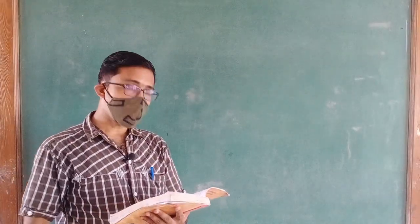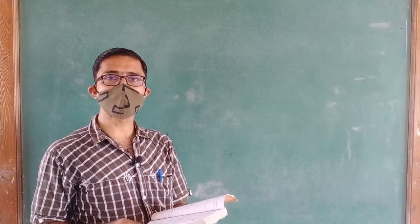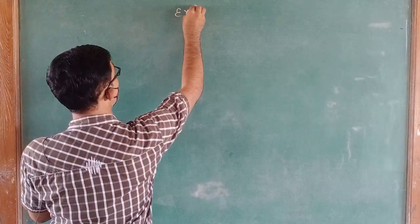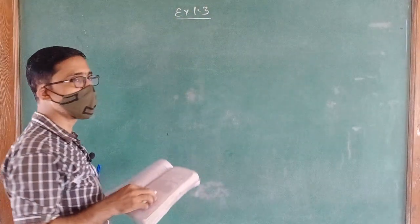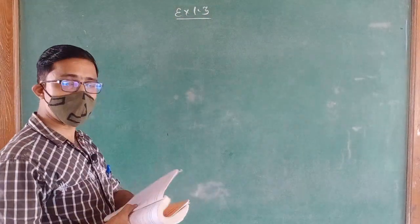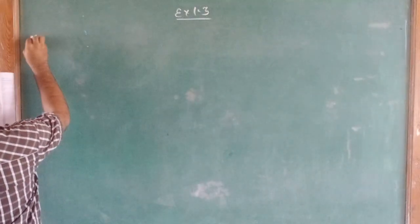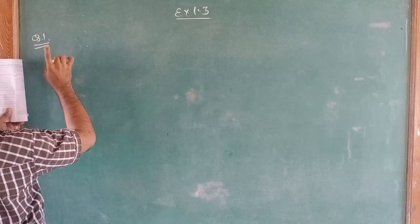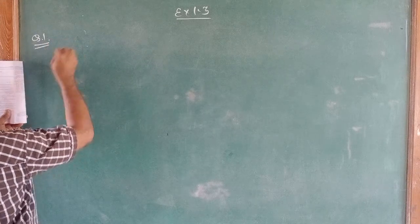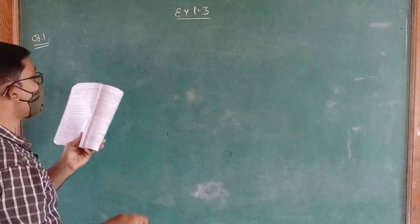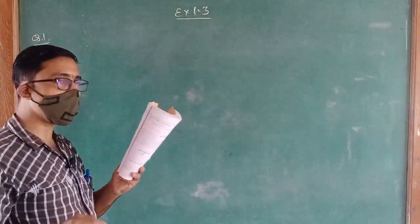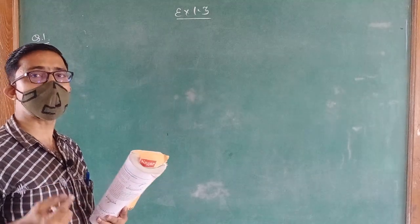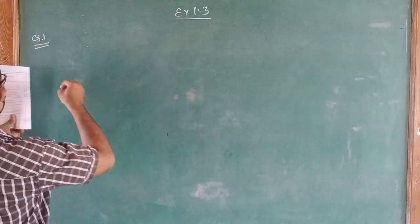Friends, today we are learning Exercise 1.3. Exercise 1.3 में हमें क्या दिया हुआ है वो हम देखें। Question No.1: Write the following in decimal form and say what kind of decimal expansion each has. हमें decimal form में बताना है और किस टाइप का decimal expansion है वो हमें यहाँ पर show करना है।